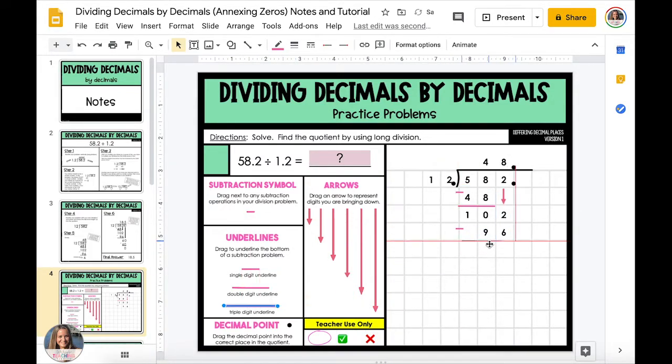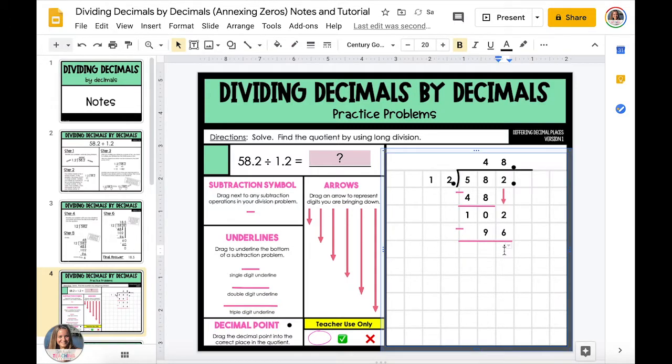When you're finished dividing and you end up with a remainder, we could either stop there and write it as a remainder, but with decimal numbers we can take a remainder and continue to make it a decimal answer.